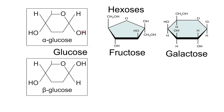Hydrogen can only form one bond, which is to the oxygen. So if you draw the bond to the hydrogen that will be incorrect. You can't even draw it to the center of the group — it needs to go directly to the oxygen. Get practicing drawing those structures.